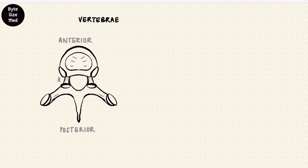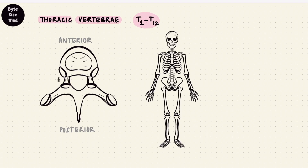The next 12 vertebrae are the thoracic vertebrae. They form a part of the thoracic cage. A very obvious thing that they would have is something to attach them to the ribs — those are costal facets.